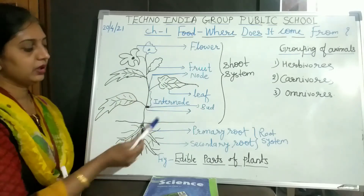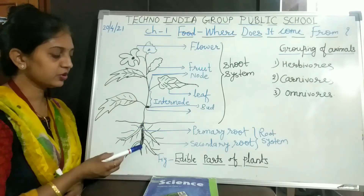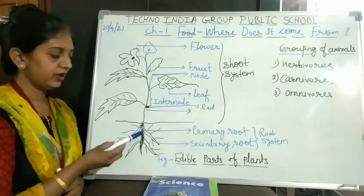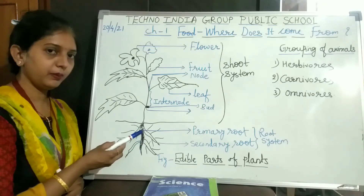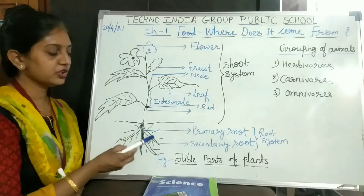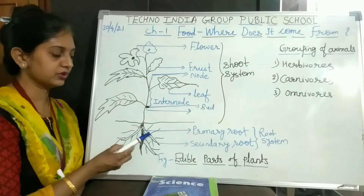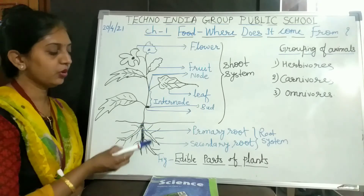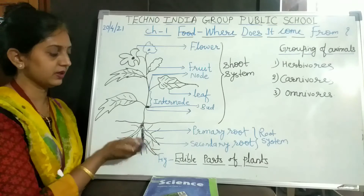The root which goes inside the soil is the main root. From that main root, there are different branches of roots that come out, which we call secondary roots. These go into the soil — that is the root system.